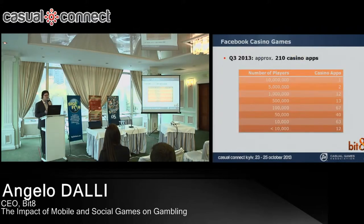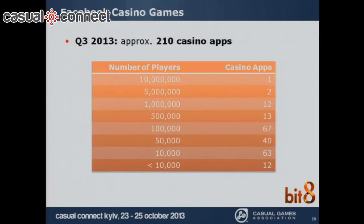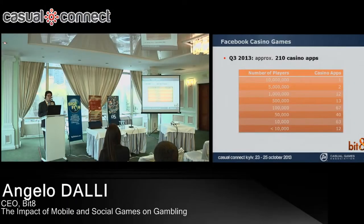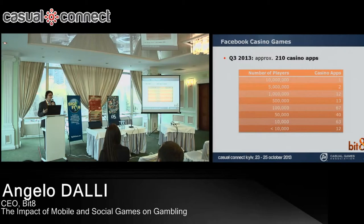Looking at analysis of around 210 casino apps on Facebook: just one of those apps has more than 10 million players, around two have around 5 million players, 12 have 1 million players, and the rest have half a million players and above. Around 63 out of 210 have 10,000 or fewer players. So there is a distribution where the winner takes all.